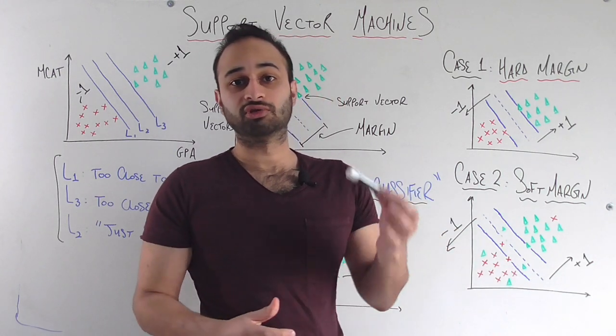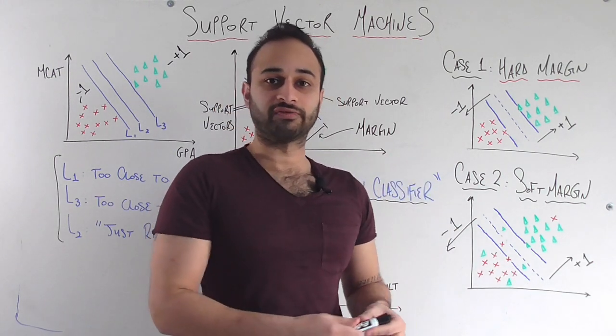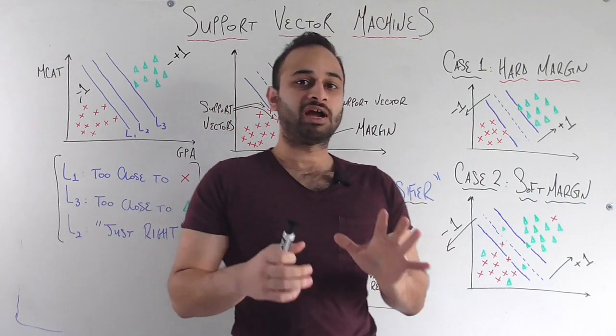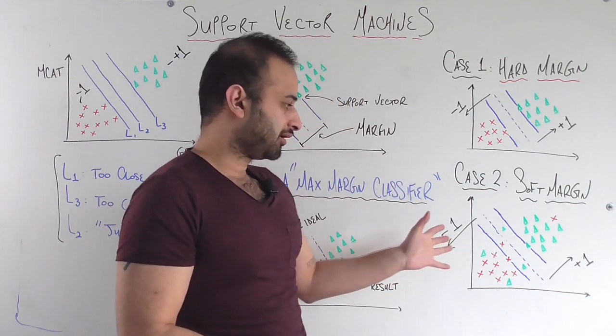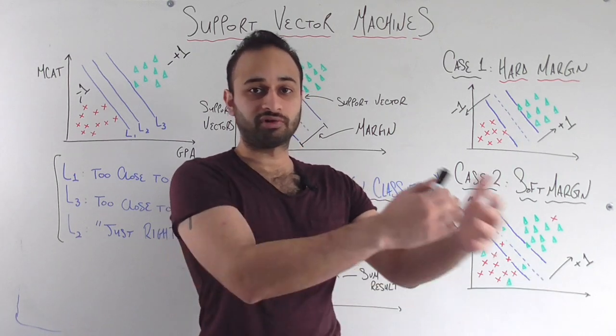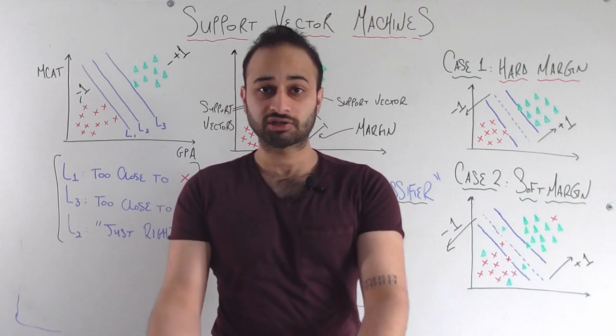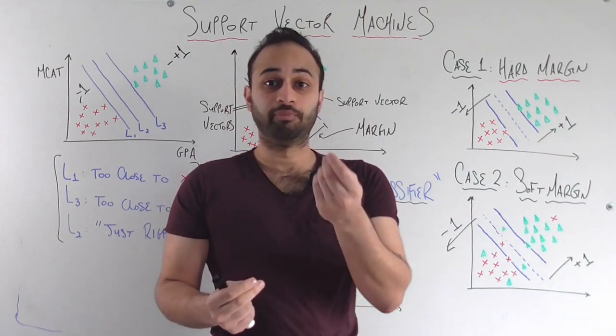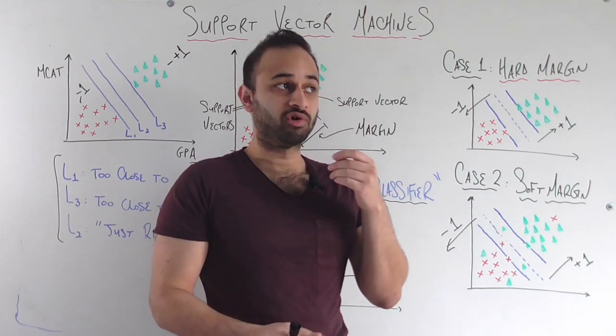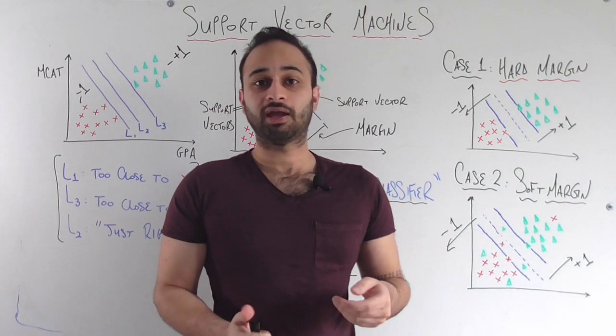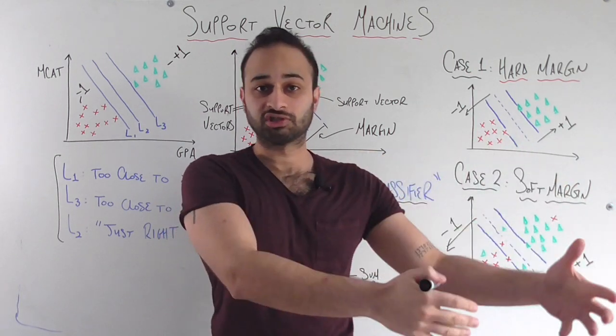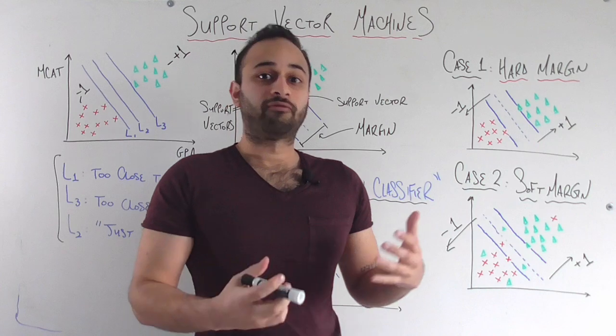So most of the time we're going to use a soft margin version of SVM. Which means that yes, I would like you to have everything on one side of the decision boundary be a certain class and on the other side to be the other class. But I understand that's not how the world always works. So I'm going to allow you to make some mistakes. But I'm going to give you a penalty for every mistake you make. And I'm going to give you a bigger penalty if the mistake is bigger.